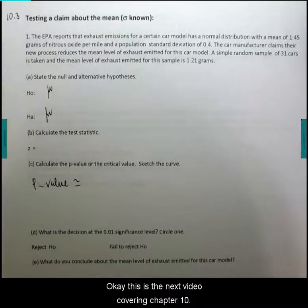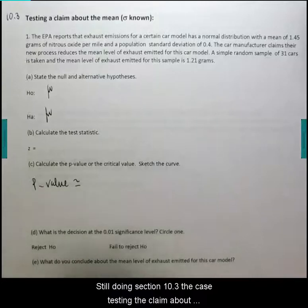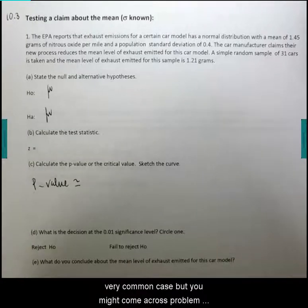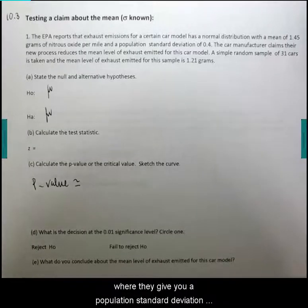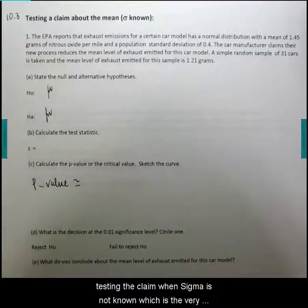Okay, this is the next video covering chapter 10, still doing section 10.3, the case testing claim about the mean when sigma is known. Although this is not a very common case, you might come across problems where they give you population standard deviation. So I'm going to do one more exercise and then go to testing the claim when sigma is not known, which is the very common case.